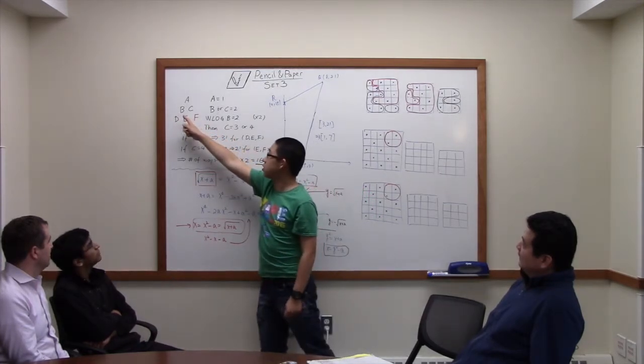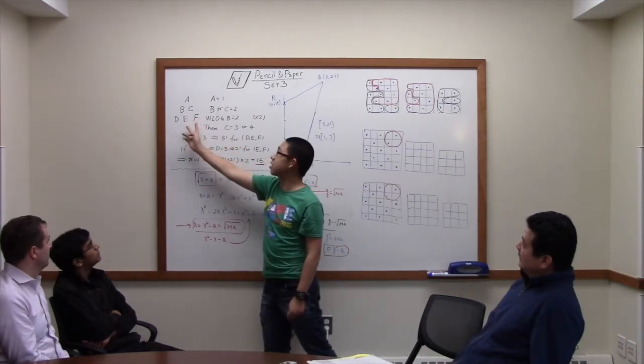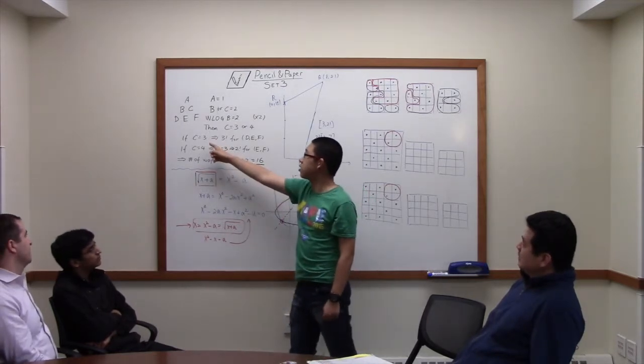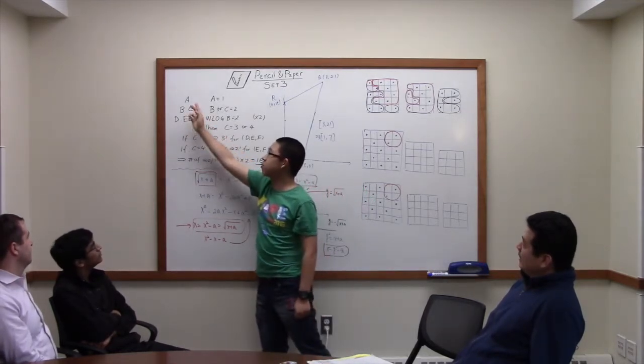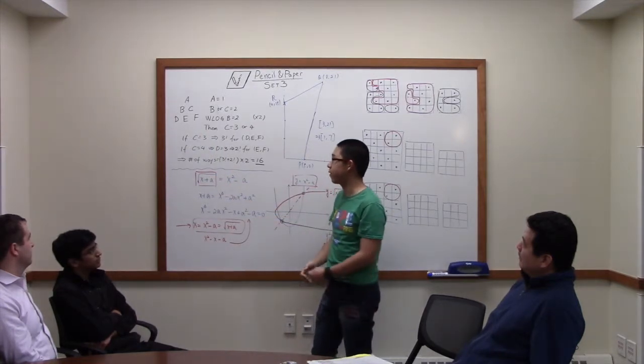So, if B equals two, then C has to be three or four. Because if C equals five or six, then it cannot have 200% of support. So, if C equals three, then basically the lightest people are on top, so D, E, F can be arranged. And if it's four, five, six, then it's three factorial.